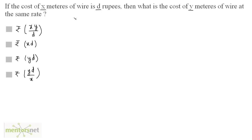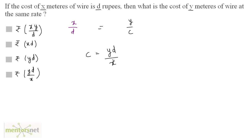Let us take the ratios. We have the ratio of distance and cost. So x by d is one ratio, and the other ratio is y meters, that is y by — let the cost be c. That is what we have to find. These two ratios are in direct proportion, so I can directly equate them. Therefore, c is equal to y·d divided by x, and that is the cost. So option D is the correct answer.